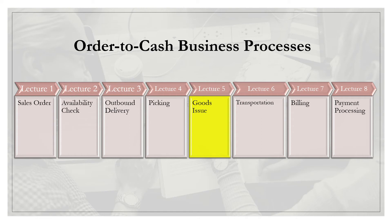Welcome back. This is section 5 of your Order-to-Cash business process. So far in the previous lessons we went over creating a sales order, availability check, outbound delivery document, and picking and packing. Now once we pick and pack everything, we are going to post goods issue — basically meaning that the goods have been sent out and now belong to the customer. It's a way for a company to update their materials.